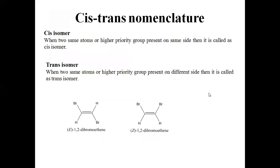Now one important point is the cis-trans nomenclature in geometrical isomers. Some isomers are called cis-isomers and some are called trans-isomers. When two same atoms or higher priority groups are present on the same side of the double bond, it is called a cis-isomer.